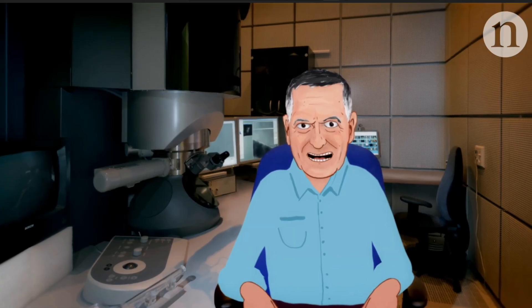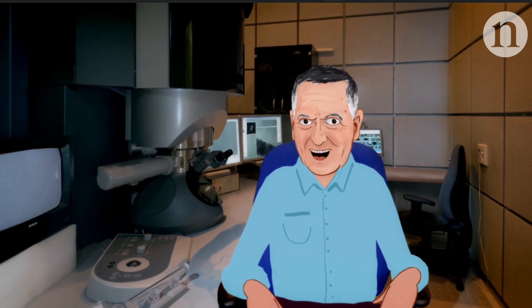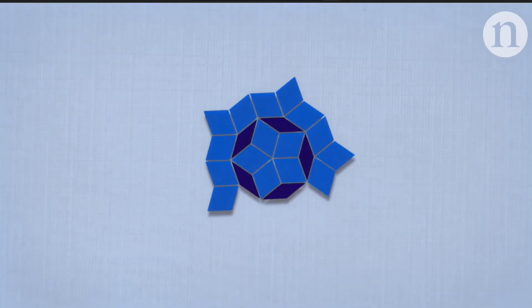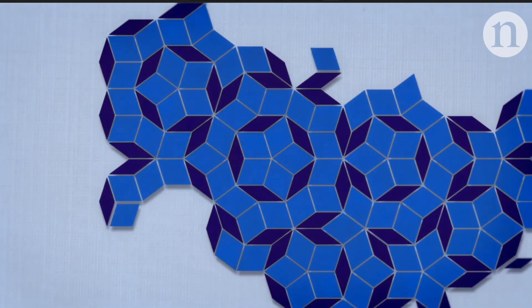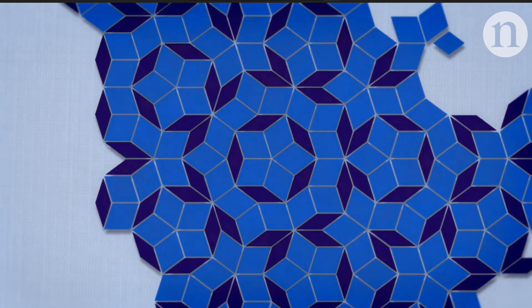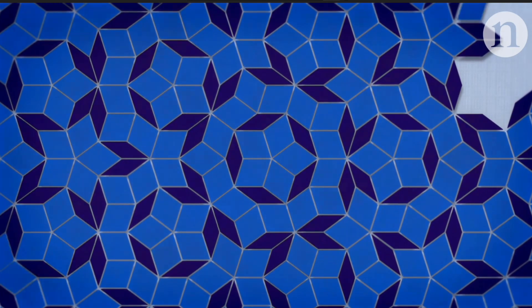So let's talk about quasi-periodicity in two dimensions and the perfect example are penrose tiles. And you can tile the floor with penrose tiles. You can do it quasi-periodically if you follow certain matching rules. There will be no gaps and everything will be fitted properly.